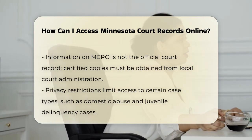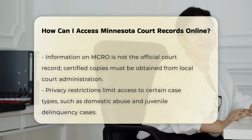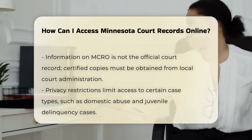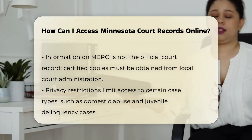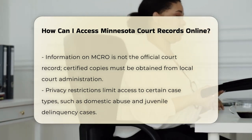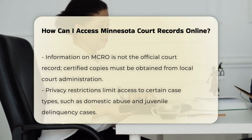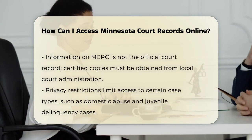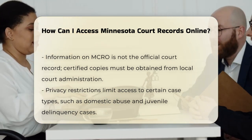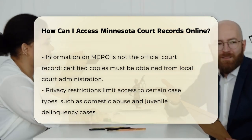Limited case record information: The online system limits the information available due to privacy reasons. For example, domestic abuse, harassment, restraining order, child protection, and juvenile delinquency cases are not accessible online. Additionally, party street addresses and certain comment fields are also restricted.